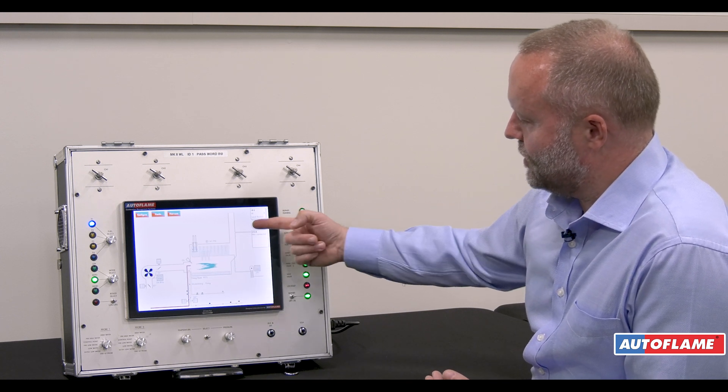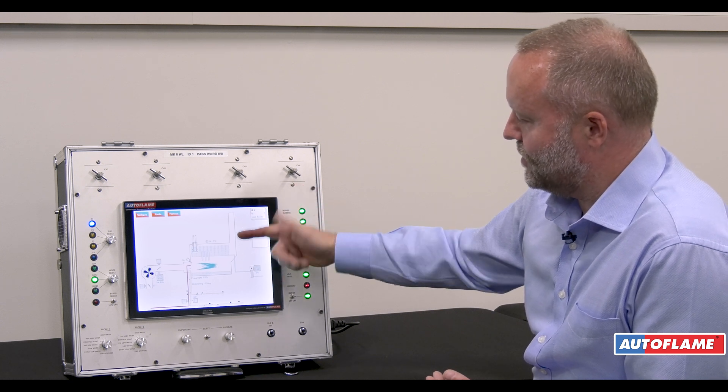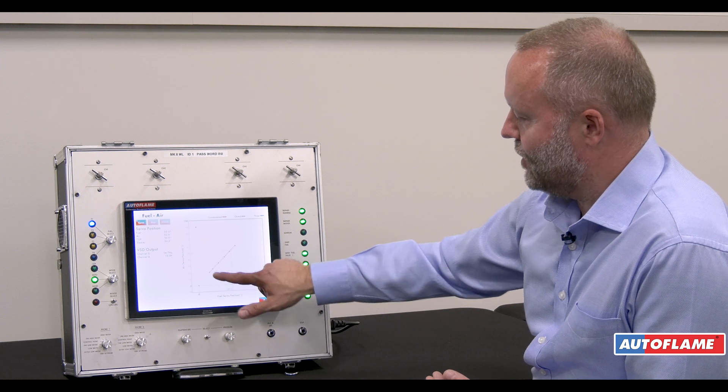Obviously if we measured the combustion at that point we'd have a very high oxygen level, meaning it would be impossible to set the fuel air ratio curve.